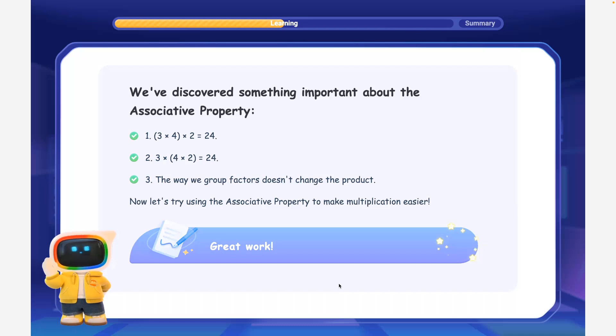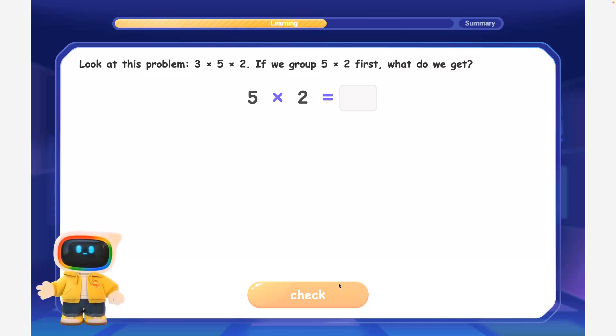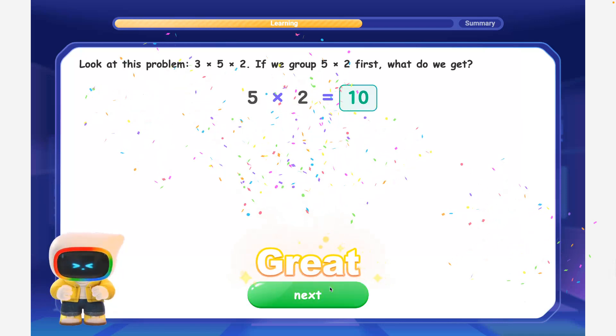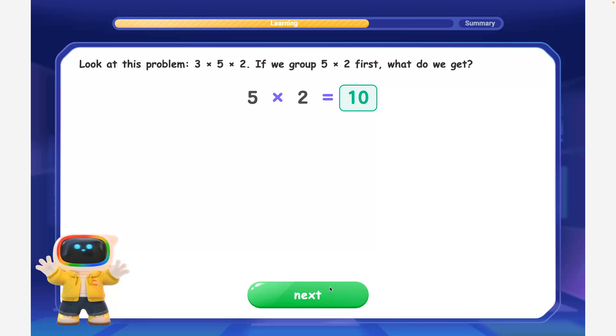Now let's try using the associative property to make multiplication easier. Look at this problem: 3 times 5 times 2. If we group 5 times 2 first, what do we get? Correct! 5 times 2 is equal to 10, so 3 times 5 times 2 is equal to 3 times 10.